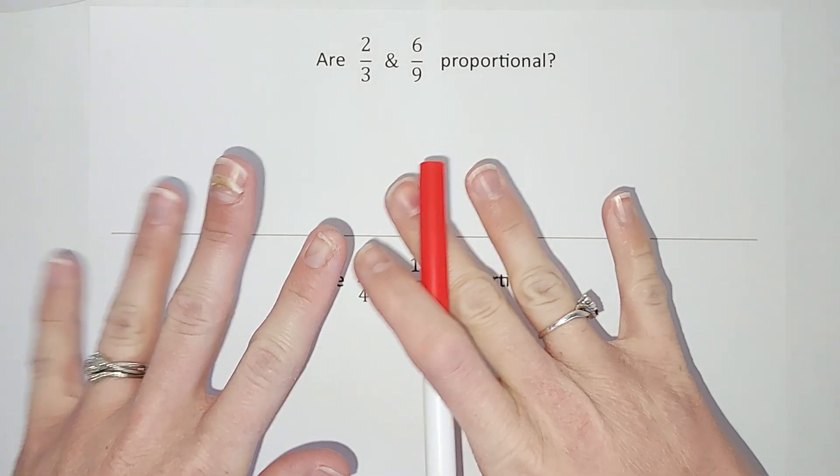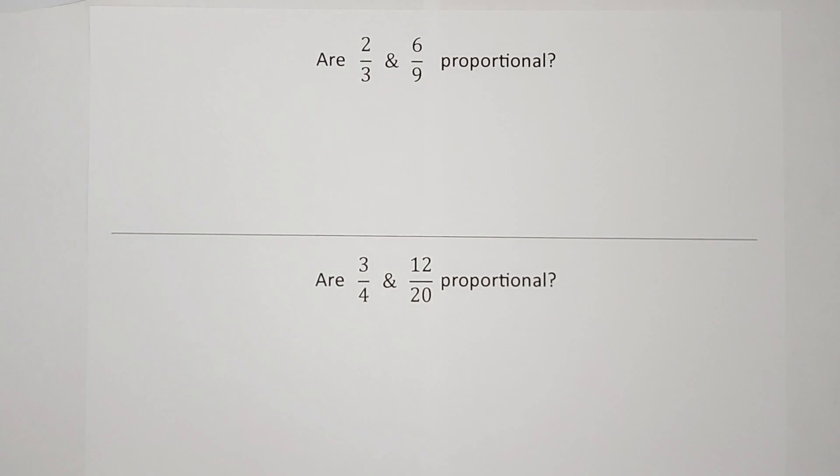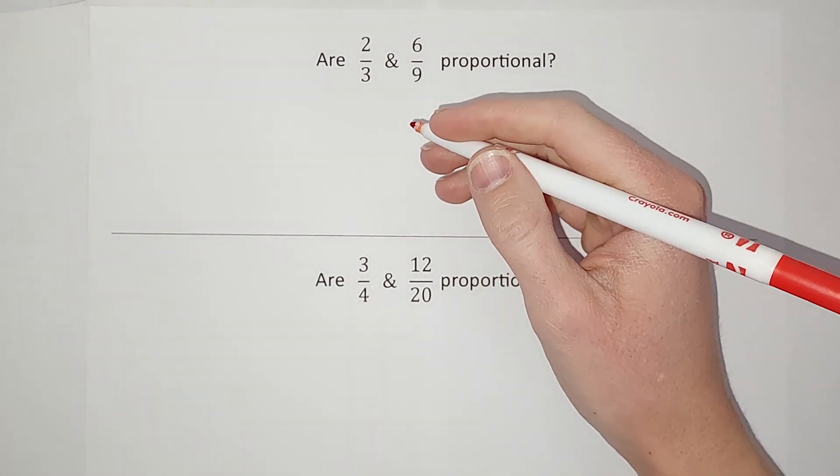A map should be proportional to whatever it's mapping out. Hopefully that kind of makes sense.